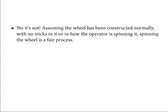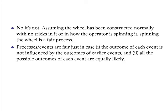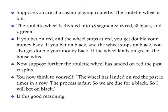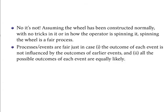The answer is no. Assuming that the wheel has been constructed normally and there are no tricks in it or in how the operator is spinning it — what we've called a fair process — you can think of a process as a series of possible events. Playing roulette consists of a bunch of different spins, and each spin produces an outcome of the wheel landing on red, black, or green. What it means for a process like this to be fair is that the outcome of each event is not influenced by the outcomes of the earlier spins.